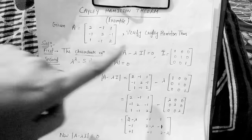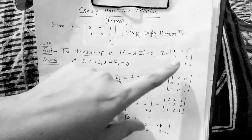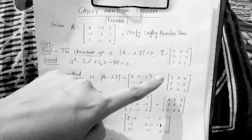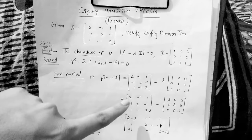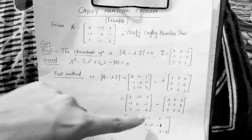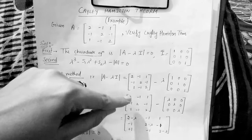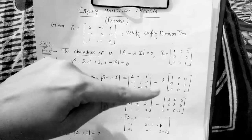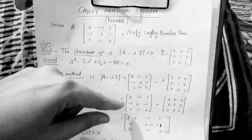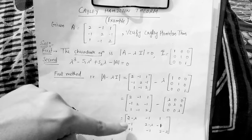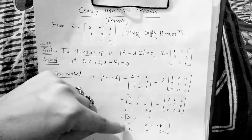I am going to explain both methods — you can opt for either one. Starting with the first method: |A - λI| = 0. We put the value of A as the given matrix, and λI is the identity matrix multiplied by λ. So A minus λI gives us a matrix where we subtract the corresponding elements. For example, 2 minus λ, 2 minus λ, and so on. After subtraction we get the value of A - λI, and now we find the determinant of this matrix.